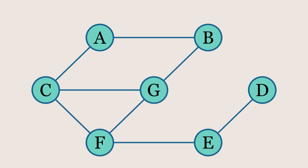The graph you are seeing is known as an undirected graph, where the connections between nodes have no direction. This means that if there is an edge between two nodes, you can move between them in both directions.